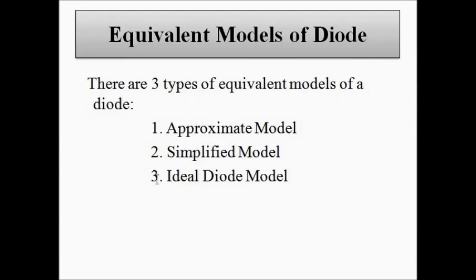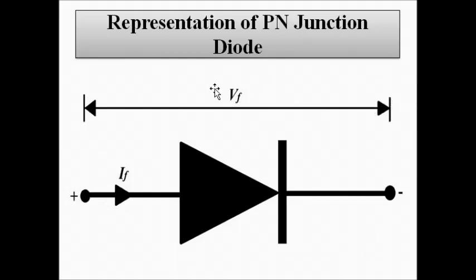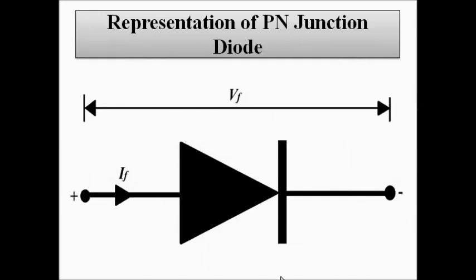Here we have the PN junction diode — the arrowhead represents the P-type semiconductor and the bar represents the N-type semiconductor. VF, or V subscript F, is the forward voltage across the PN junction diode, and IF, or I subscript F, is the forward current which flows through the diode in one direction, because it is a unilateral device that allows current flow only in one direction.